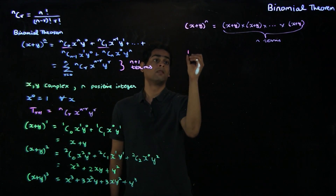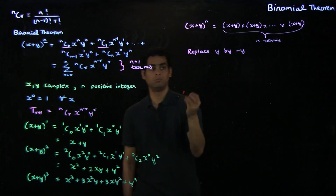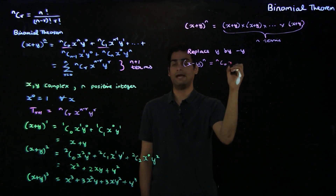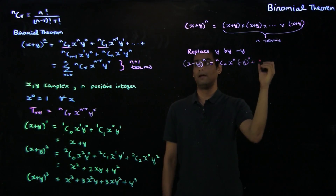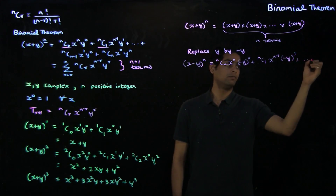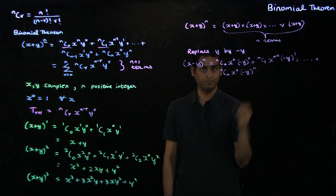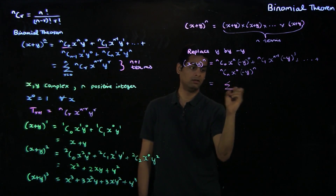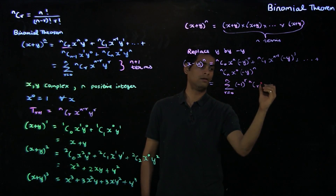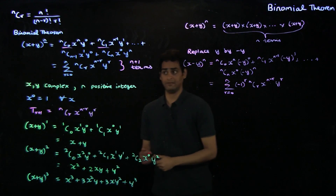For instance, you could replace y by minus y in the theorem, and upon doing so, you would get an expression for x minus y raised to the n. This is nc0 times x to the n times minus y to the 0, plus nc1 times x to the n minus 1 times minus y to the 1, and so on, till ncn times x to the 0 times minus y raised to the n. This can be more simply written as summation r equal to 0 to n of minus 1 to the r times nCr times x to the n minus r times y to the r.